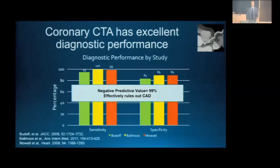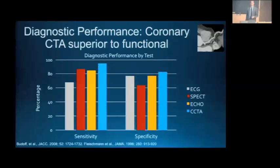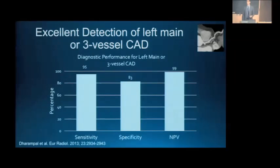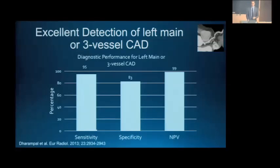Comparing coronary CTA performance to functional tests, CTA has both improved sensitivity and specificity. For ruling out severe disease, a study of 1,200 patients who underwent both coronary CT angiography and invasive angiography showed 95% sensitivity for ruling out left main and three-vessel obstructive disease, 83% specificity, and a negative predictive value of 99% — effectively allowing us to rule out severe three-vessel or left main disease.